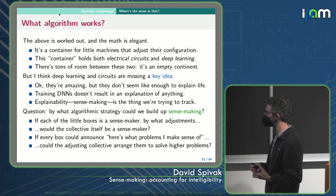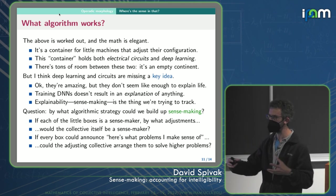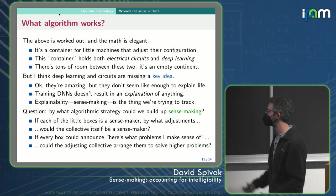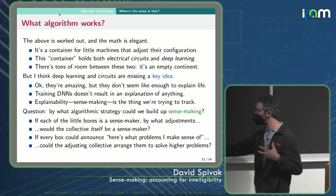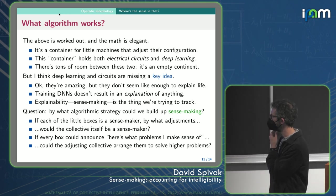So if each of the little boxes, so this is a question for you, if each of the little boxes is a sense maker, then by what adjustments, when you're trying to construct a conference so that the little sense makers can get together and make a new sense, by what adjustments would the collective come together to form a sense maker? How would we decide when we talk to Bob and when we talk to Sue?